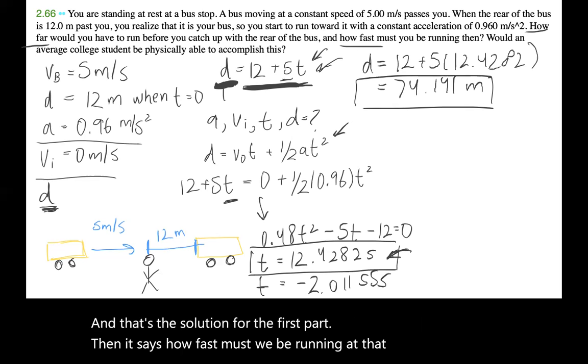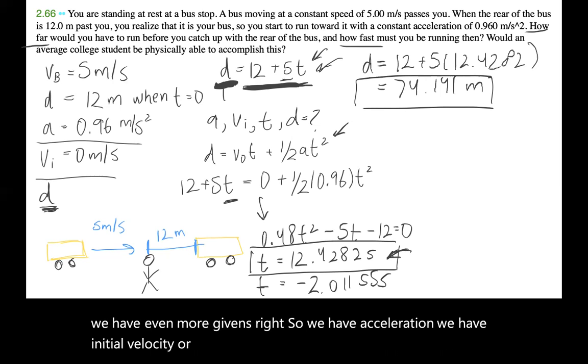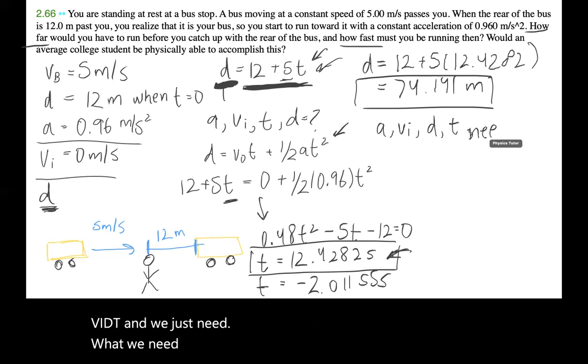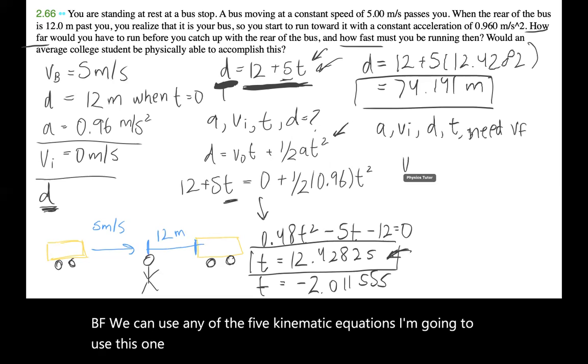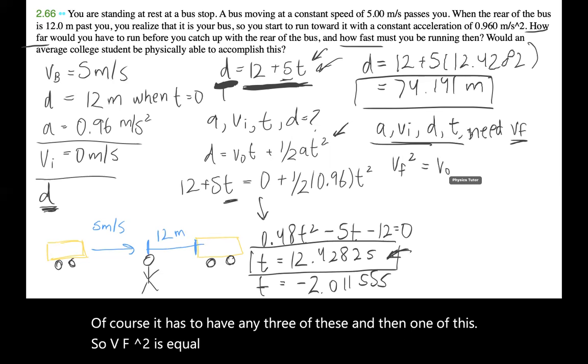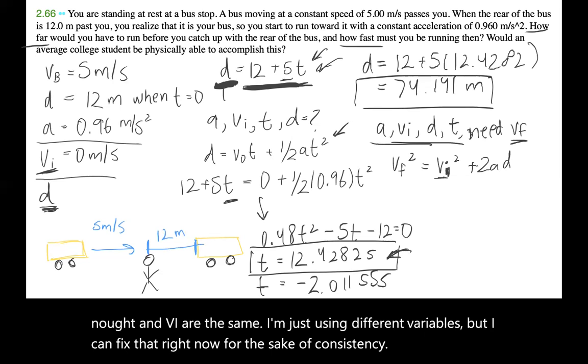Then it says, how fast must we be running at that point? Again, now we have even more givens. We have acceleration, we have initial velocity or initial speed, we have time it takes, and we have distance. So using any combination of this, we have a, vi, d, t, and we just need vf. We can use any of the five kinematic equations. I'm going to use this one right here, but feel free to experiment and try with another one. You're going to get the same answer. Of course, it has to have any three of these and then one of this.